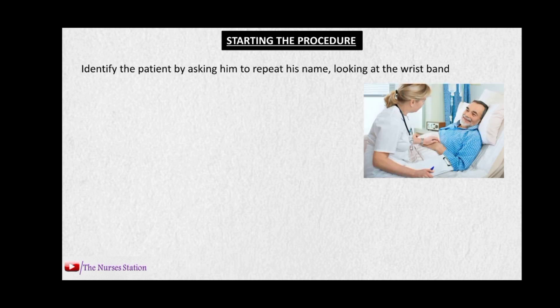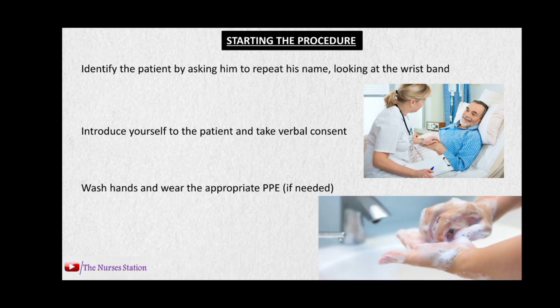Starting the procedure. The first and most important step is to identify the patient by asking them to repeat their name or by checking their wristband where basic information like name and date of birth is noted. Second, introduce yourself to the patient and take verbal consent for assessing the vital signs to win their confidence and make them comfortable. Then wash hands and wear appropriate personal protective equipment.